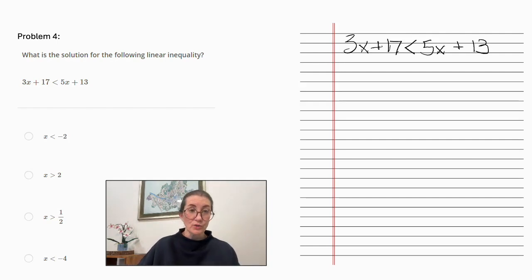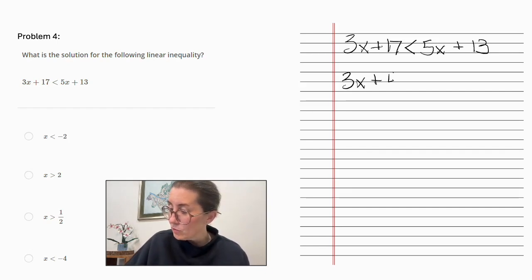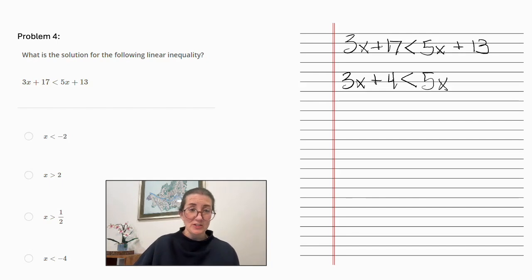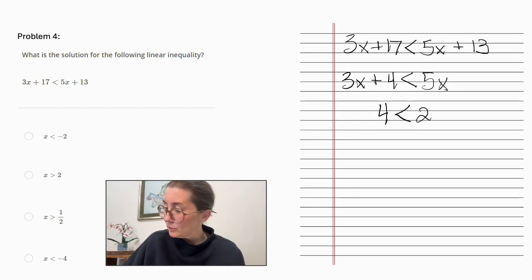We're going to take away 13 from each side. That leaves us with 3x plus 4 is less than 5x. Now we're going to remove 3x from each side. We have 4 is less than 2x.